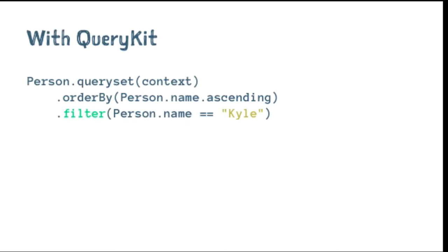With QueryKit, this is much simpler. You'd create the same query with a single line — though I've wrapped it into three lines here for the purpose of this screenshot. There is little room for runtime error here because these are compiled, type-safe values. So here we have person.name.equals and it returns a predicate that does the same query. You can see this is far more readable — anyone can look here and understand what you're trying to do. It's quite obvious you're ordering by the person's name ascending and filtering by a simple rule. QueryKit figures out the implementation details behind the scenes.